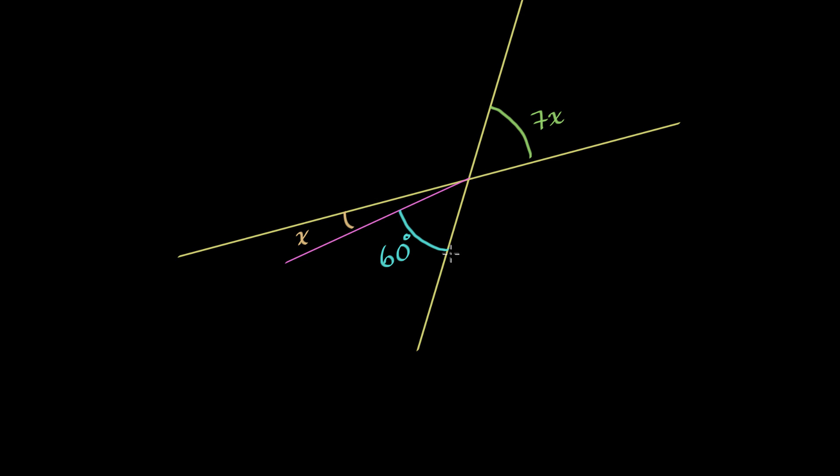We have two intersecting lines here, and then we have this other purple-looking line. They've given us some angles. They tell us that the measure of this angle right over here is 7x, the measure of this angle right over here is 60 degrees, and the measure of this angle right over here is x.